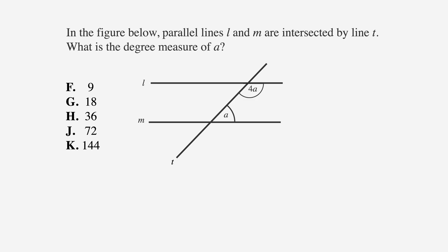In the figure below, parallel lines L and M are intersected by line T. What is the degree measure of A? The answer choices are F, 9, G, 18, H, 36, J, 72, and K, 144.